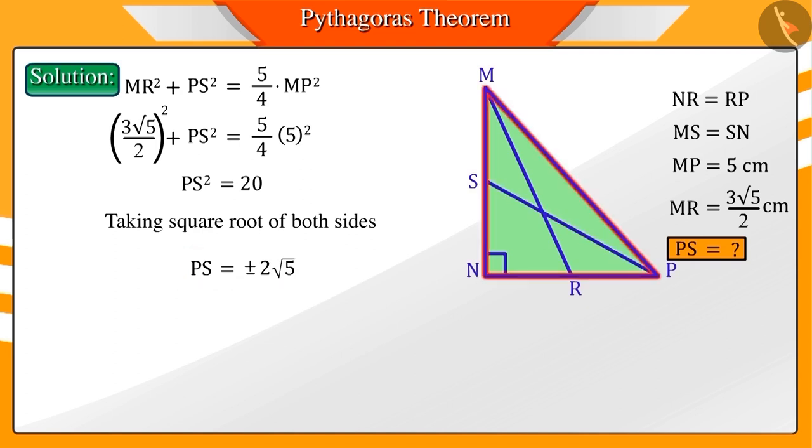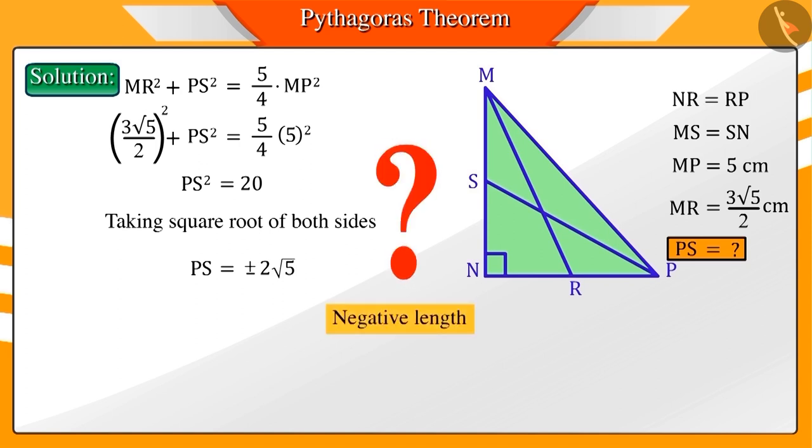PS is the median of the triangle MNP whose length we have to find. Can the length be negative? Absolutely correct! Length cannot be negative. So, we will consider positive.